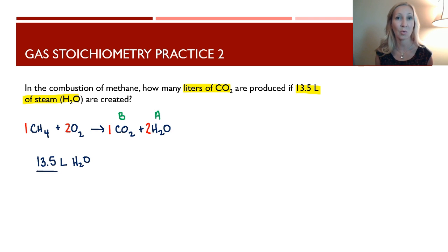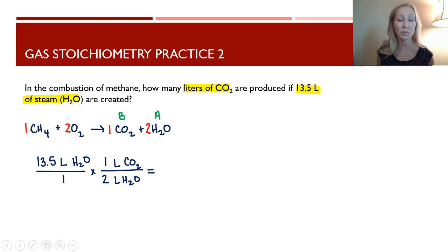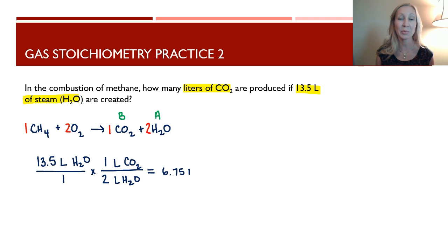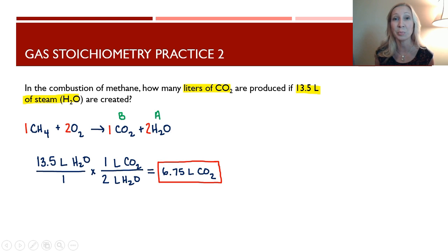I multiply by the coefficient of B over the coefficient of A, canceling out liters of H₂O. Two liters of water (steam) are produced for every one liter of carbon dioxide, so this is a 1-to-2 ratio. Half the volume of carbon dioxide is created compared to steam. I take 13.5 divided by 2 and get 6.75 — keeping three significant figures to match the given value. So 6.75 liters of carbon dioxide are produced when 13.5 liters of steam are created.